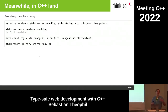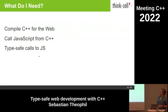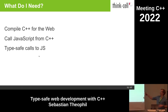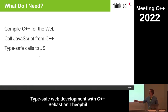There can be quite a number of good reasons to program web applications in C++. Maybe only that you want to be bought for 20 billion by Adobe — Figma, you might have heard, was a WebAssembly application. So, what do I need to get C++ into the web browser? I have to compile C++ for the web, then call JavaScript from C++, and finally make those calls in a type-safe way using the tool I've built.